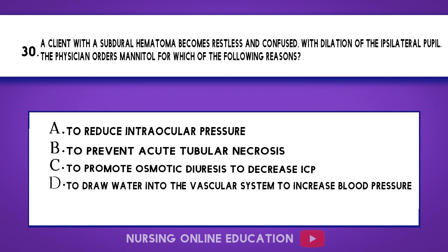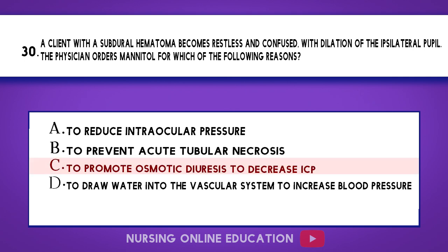Question 30. A client with a subdural hematoma becomes restless and confused with dilation of the ipsilateral pupil. The physician orders mannitol for which of the following reasons? A. To reduce intraocular pressure. B. To prevent acute tubular necrosis. C. To promote osmotic diuresis to decrease ICP. D. To draw water into the vascular system to increase blood pressure. The answer is option C: To promote osmotic diuresis to decrease ICP.